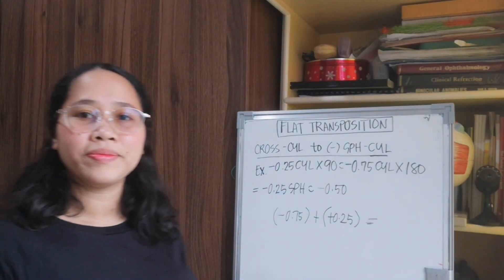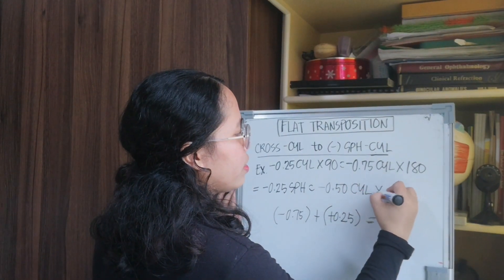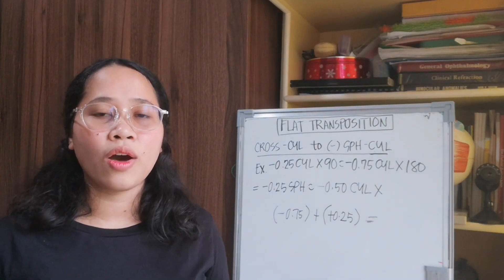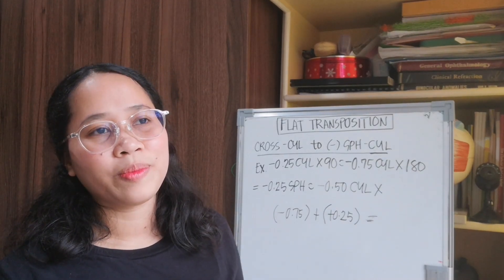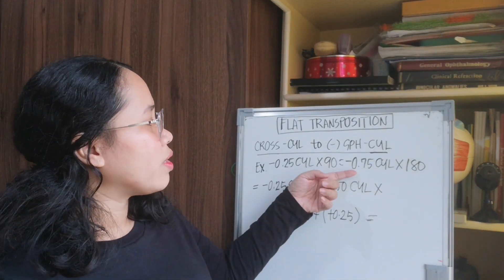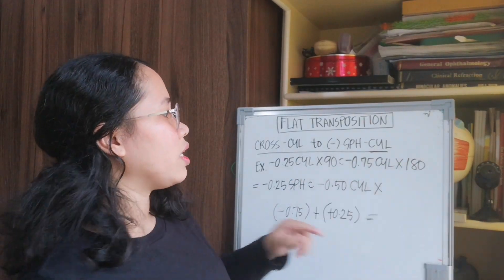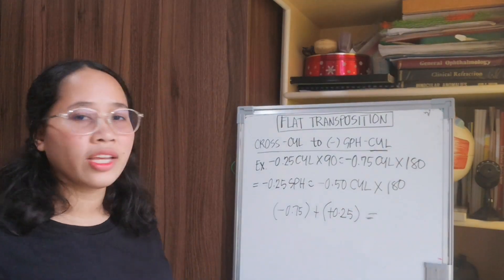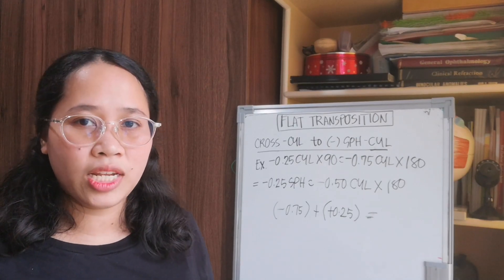The axis is taken from the axis of the value we did not use as the new sphere — we did not use minus 0.75 cylinder axis 180, so we use axis 180. That gives us our minus spherocylinder form.